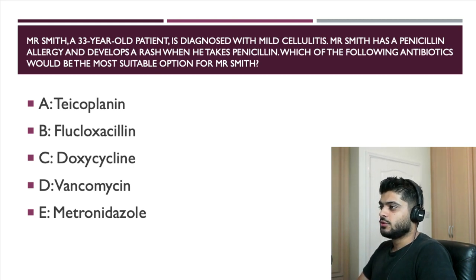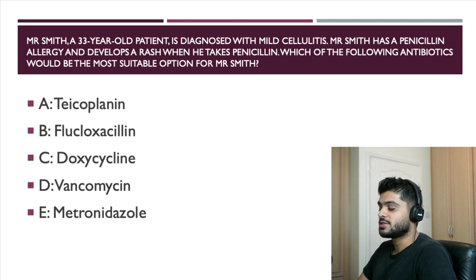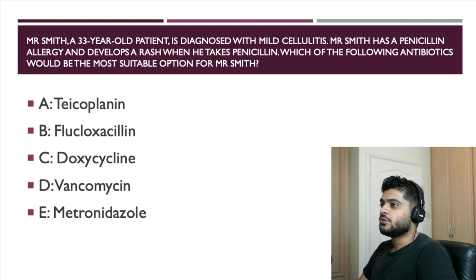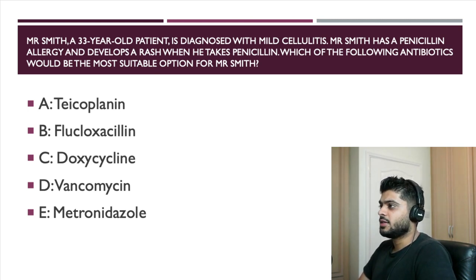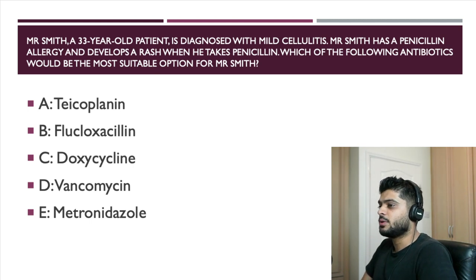Option B is flucloxacillin. Flucloxacillin would be the first-line option for mild cellulitis in a lot of trusts as well as in the NICE guidance. The reason why you can't go for it is because he has a penicillin allergy, and flucloxacillin is an example of a penicillin.